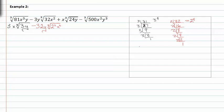Moving on to the next term: twenty four is divisible by two to get twelve, divide by two again to get six, divide by two to get three, divide by three to get one. So twenty four equals two cubed times three. Rewriting this term we get plus two x, times the cubed root of three y.